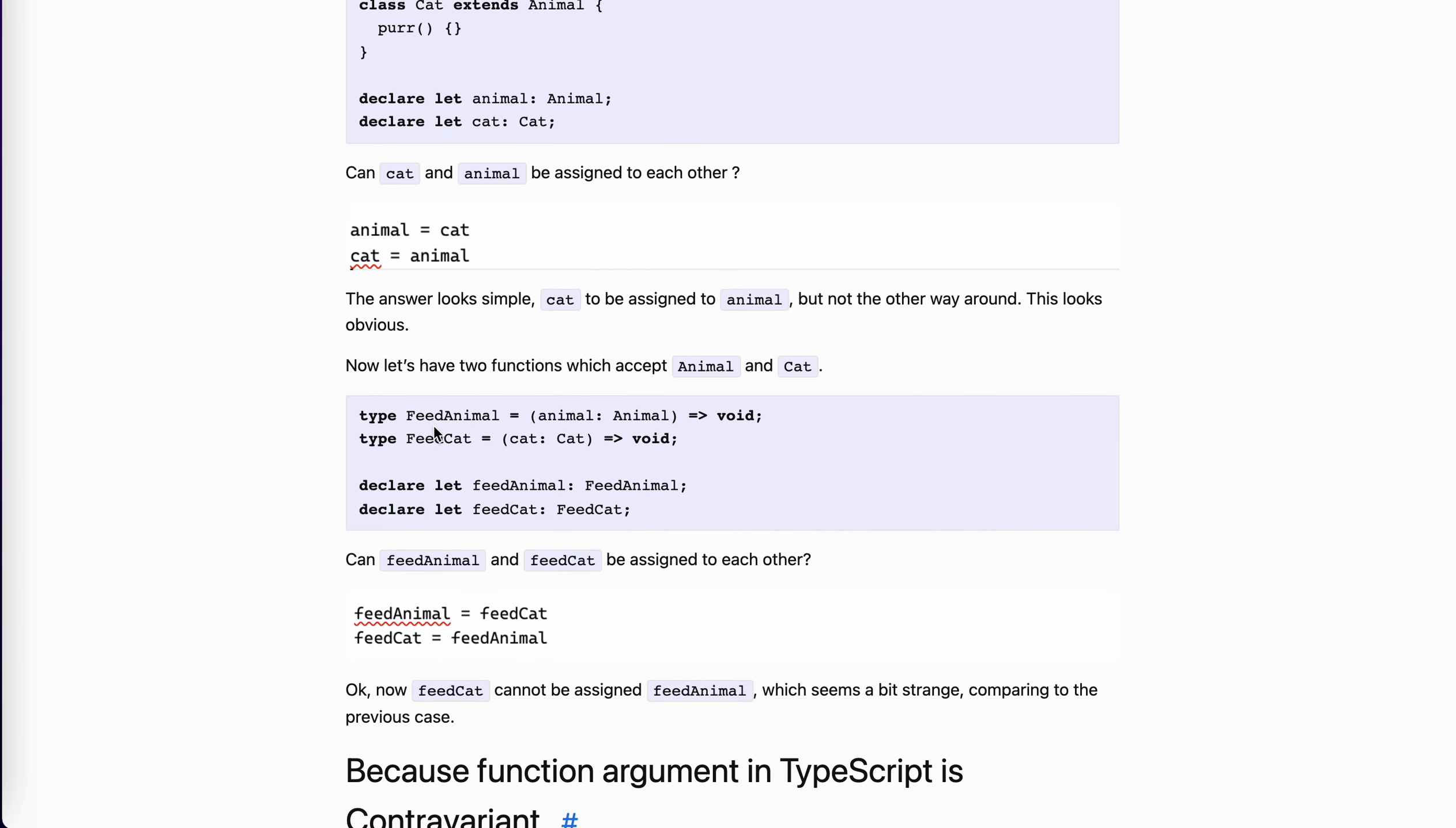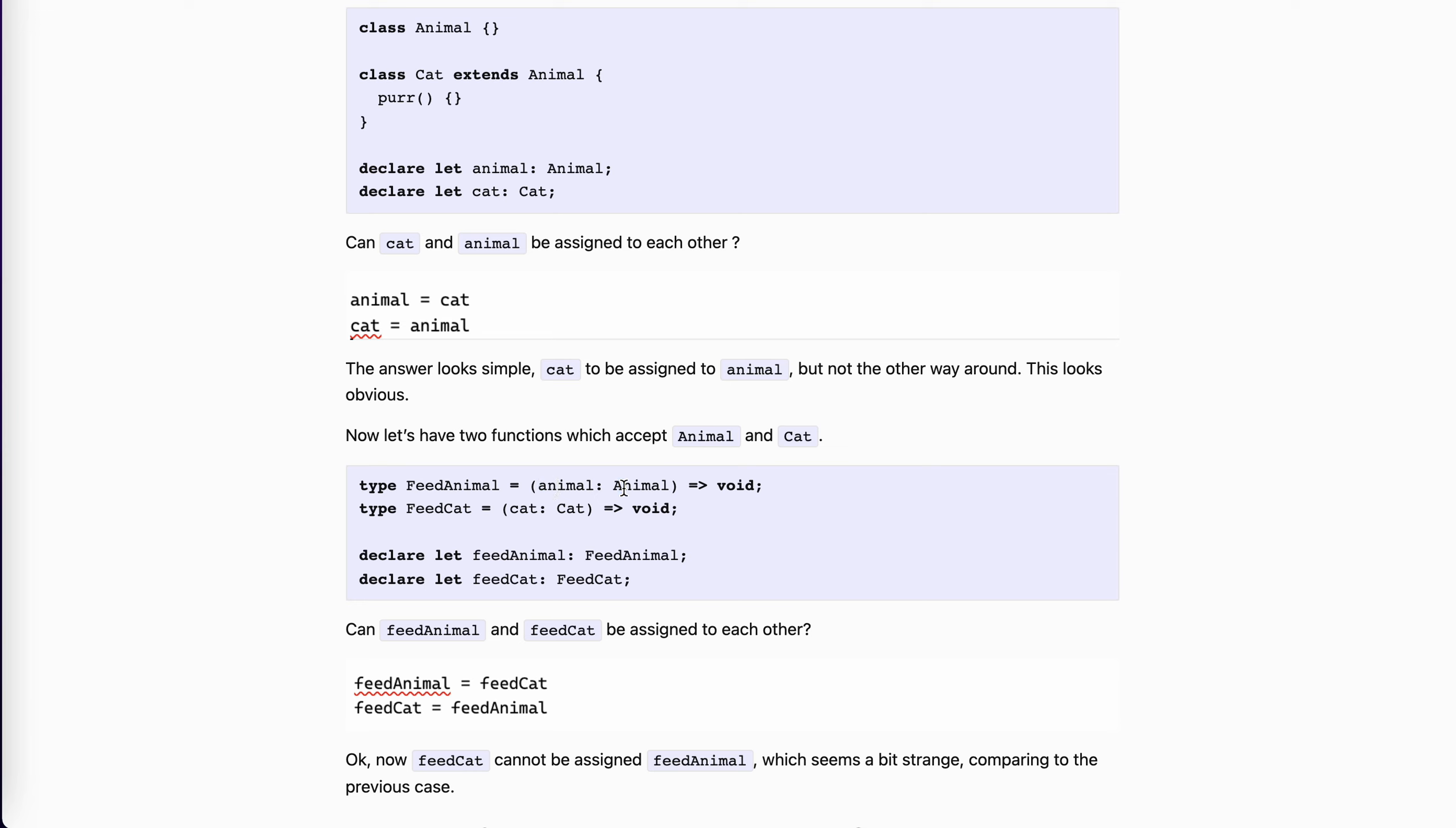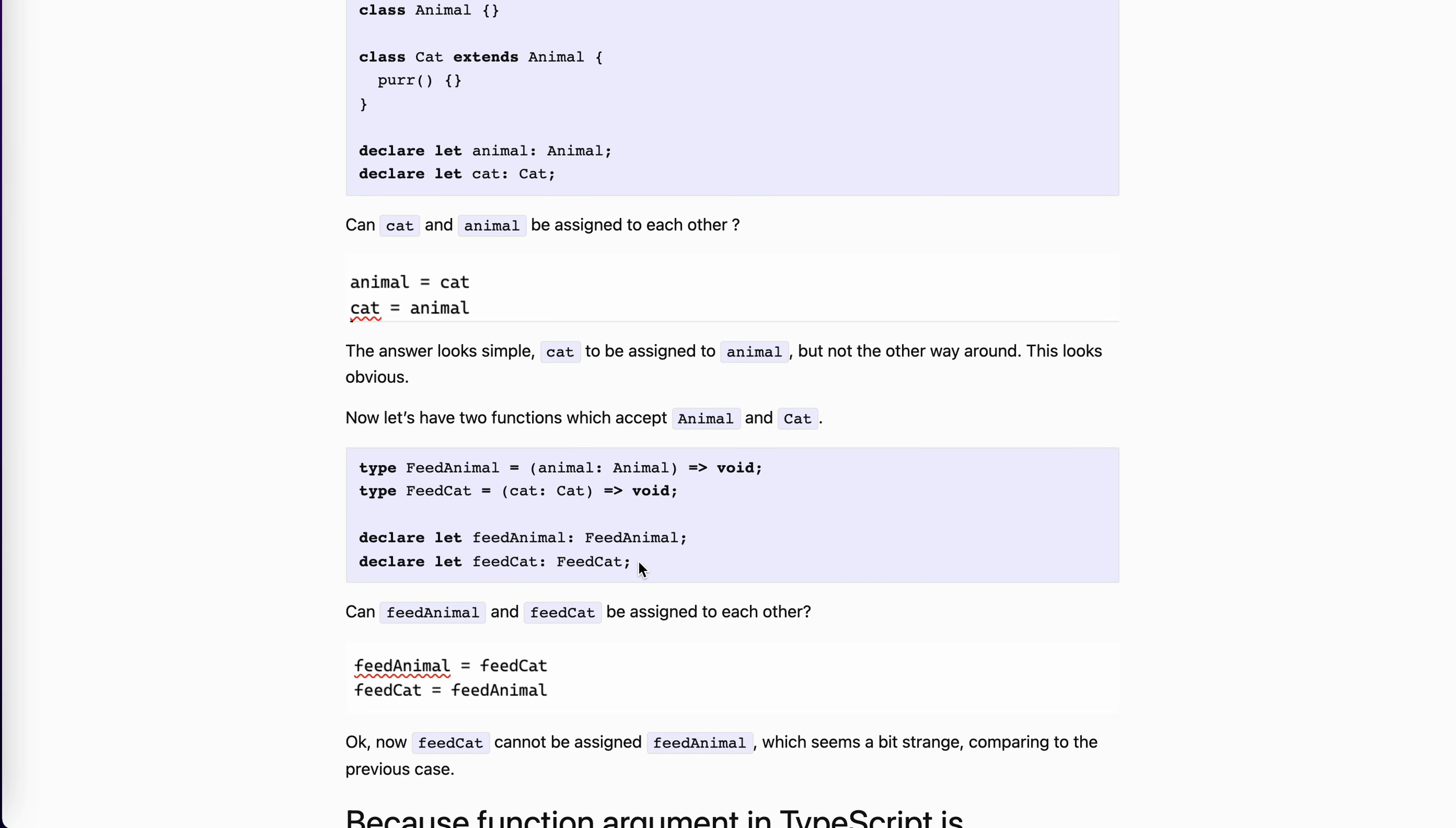But let's take a look at the other two functions. The first function is feedAnimal. We accept Animal as the argument. And feedCat, we have a Cat as the argument. So we have two functions. Can we assign to each other?